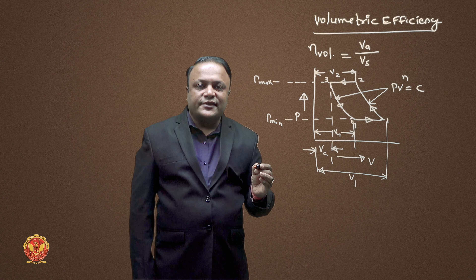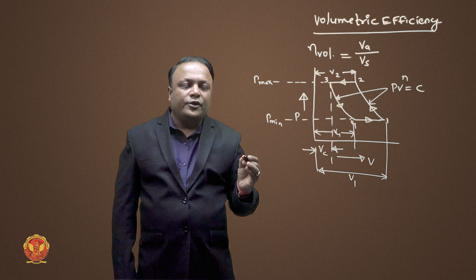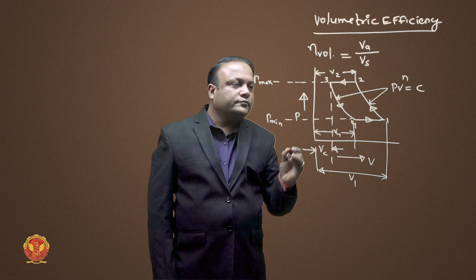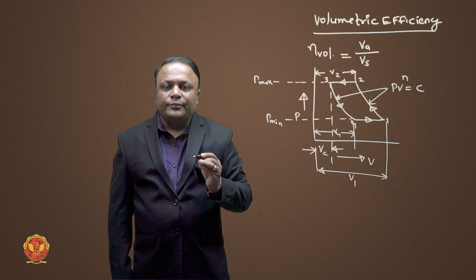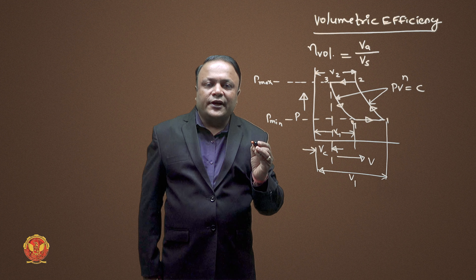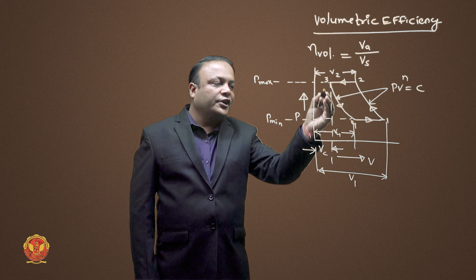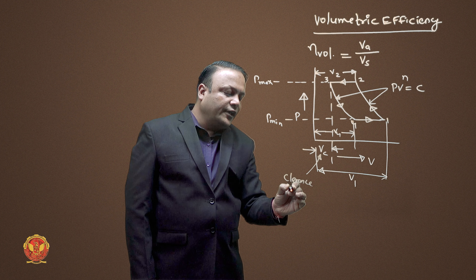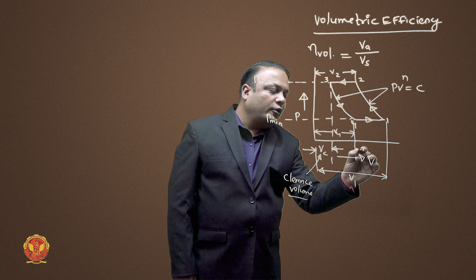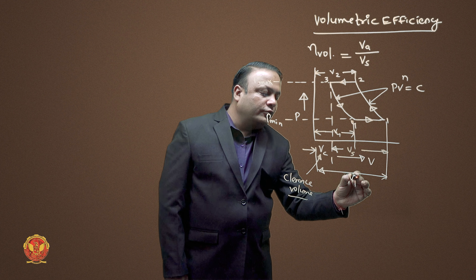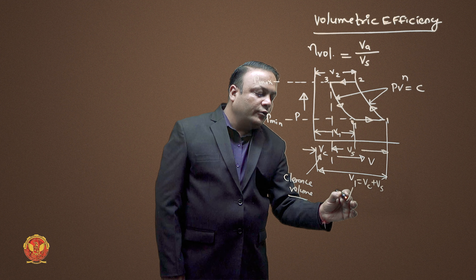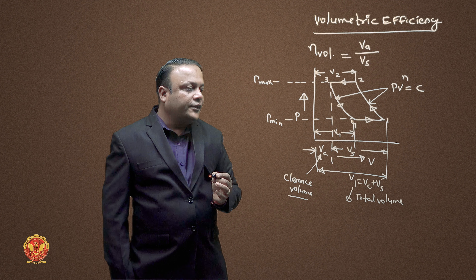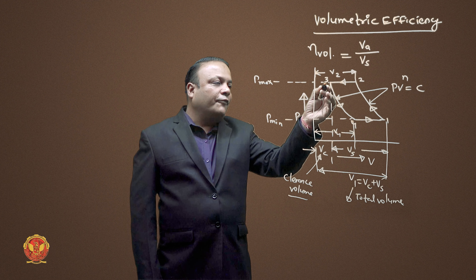Process 4-1 is suction of air; 1-2 is polytropic compression; 2-3 is delivery at constant pressure at volume V2. When the piston reaches TDC (top dead center), it never touches the cylinder head, so some clearance is maintained — this is called clearance volume (VC). The remaining volume is the stroke volume VS, so V1 = VC + VS, and V1 is called the total volume.